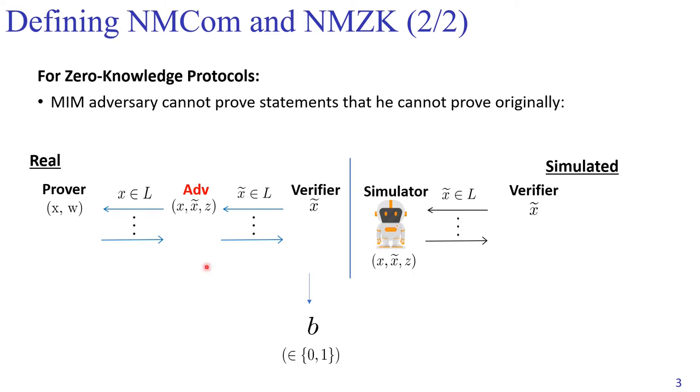Importantly, this simulator doesn't know the witness w, and also it doesn't know the witness for this x. However, this simulator is trying to make the verifier output a bit b' which is supposed to be computationally indistinguishable from the verifier's decision bit in the real world.